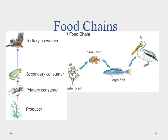What you see here are examples of food chains, and a food chain shows us the flow of energy through an ecosystem. We have to take the energy in the non-living part of the ecosystem and find a way to convert it so it's usable for organisms. A food chain shows us this flow of energy.